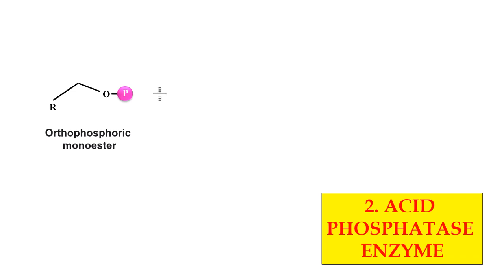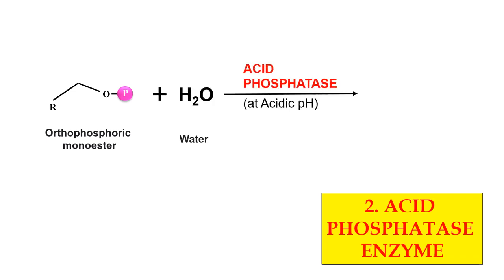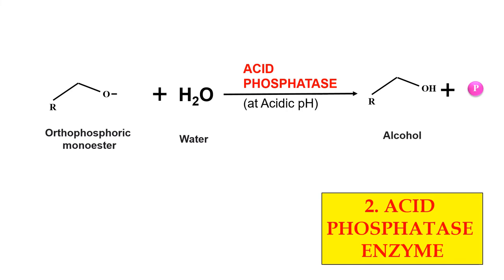By the action of Acid Phosphatase, the phosphate is removed and the enzyme works under acidic condition — that is why it is named Acid Phosphatase. The product formed is alcohol.